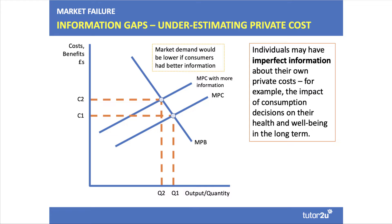A slightly different way of looking at it is to think about costs. People may have an information gap about the cost of their own consumption — for example, the costs of over-consumption of sports nutritional supplements, smoking, or gambling. Not just now but going forward over many years. If people had better information about their own internal costs, their perceived marginal private cost would be higher, which for a given level of benefit would lead to a fall in consumption. Market quantity would be lower if consumers had better information about their own costs.